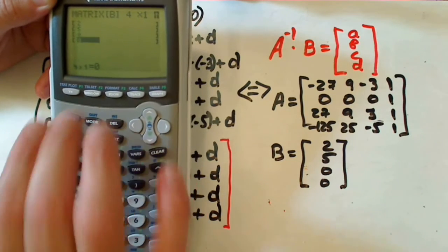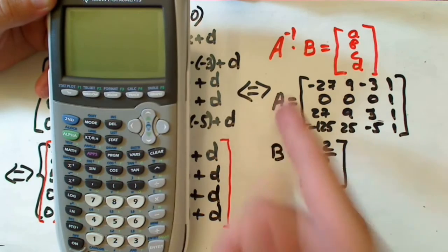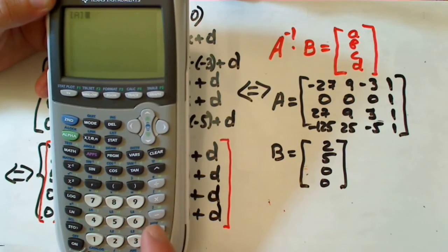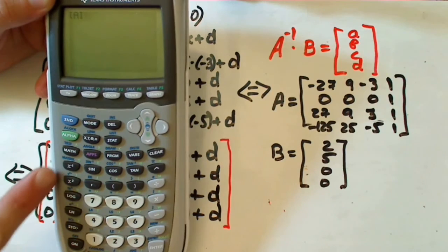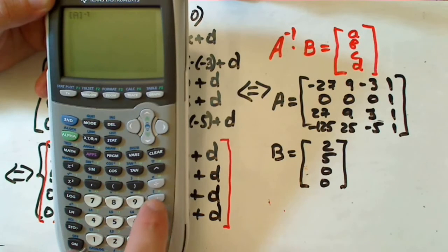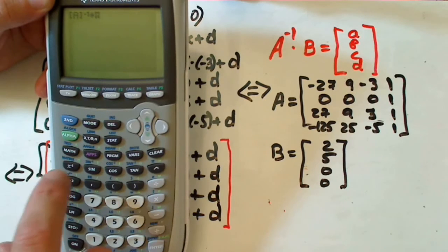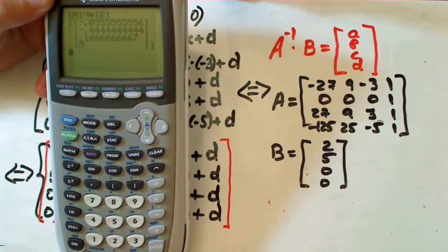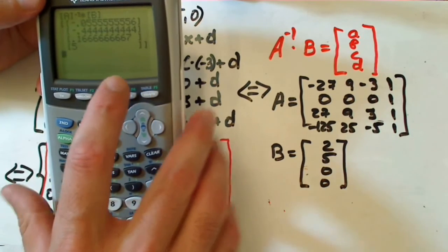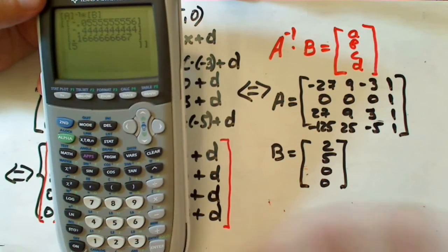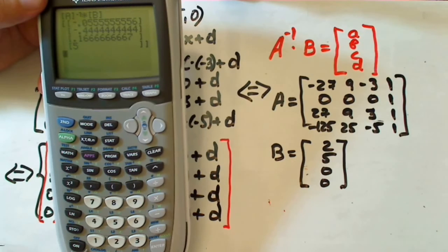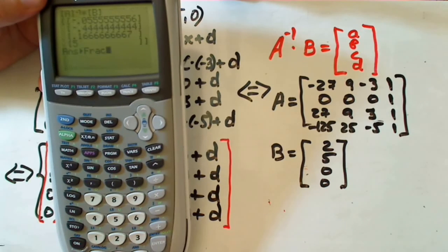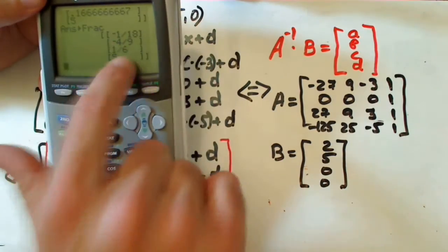Now to do the calculations: press second quit, go to calculations, and recall matrix A using second matrix in names, choosing A. We use the inverse of matrix A and multiply by matrix B. That gives us our new matrix with our answers. The result appears as decimals, so to convert to exact fractions, press math and select the fraction option, then enter.